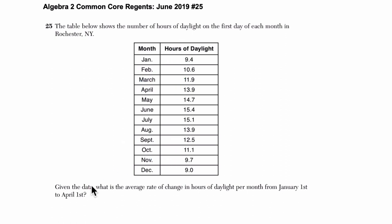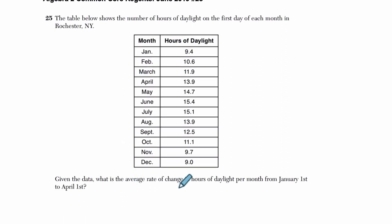Given the data, what is the average rate of change in hours of daylight per month from January 1st to April 1st?